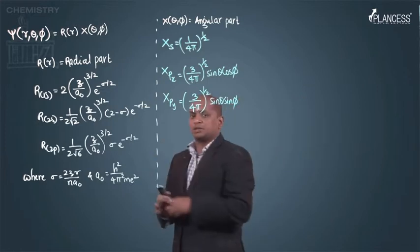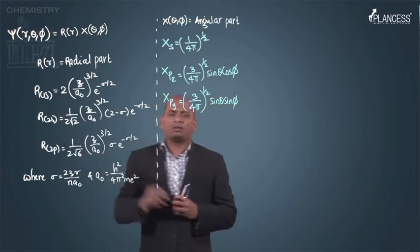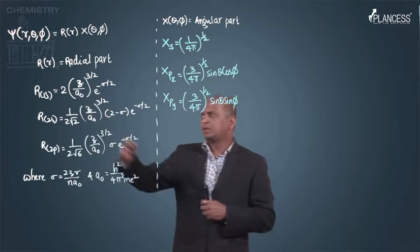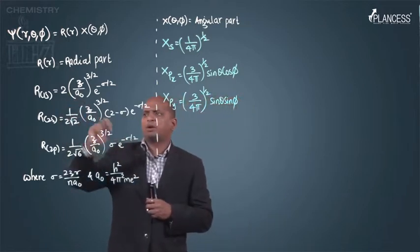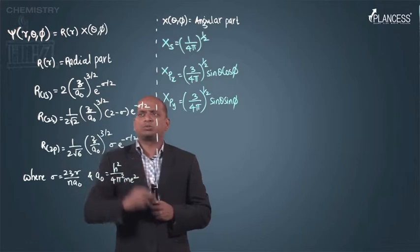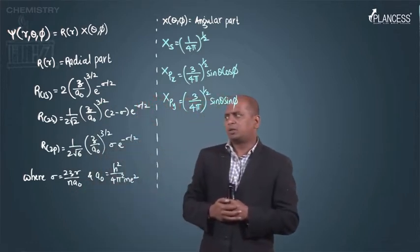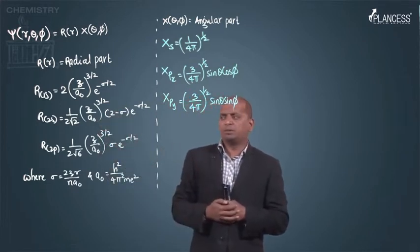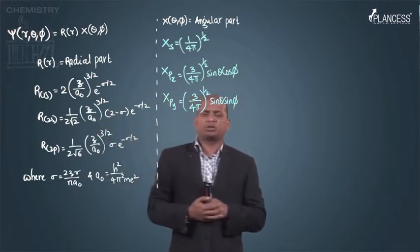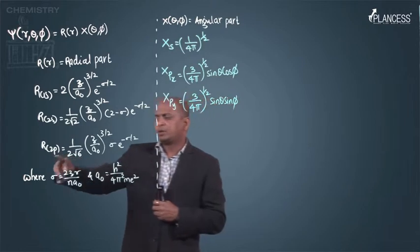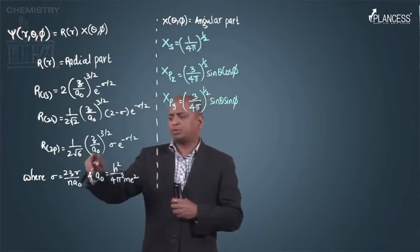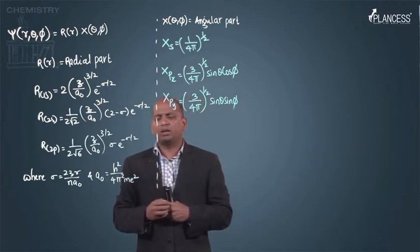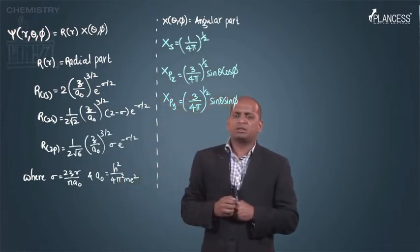These equations like r1s for first 1s orbital is equal to 2(z/a0)^(3/2) e^(-σ/2). R2s equals 1/(2√2)(z/a0)^(3/2)(2-σ)e^(-σ/2). R2p equals 1/(2√6)(z/a0)^(3/2) σe^(-σ/2).